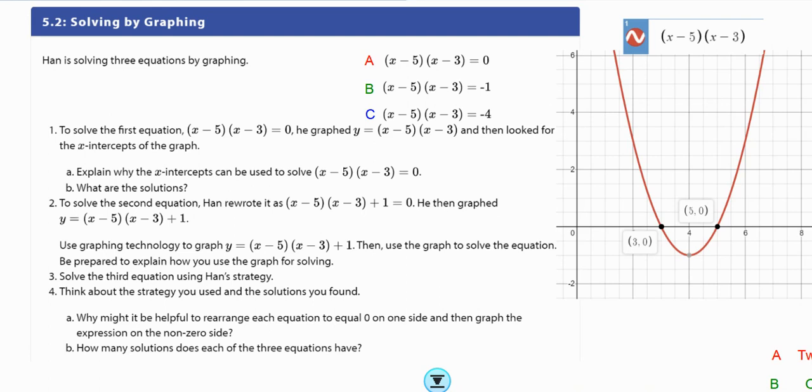Explain why the x-intercepts can be used to solve this equation. So we're going to look at this and say, this is my x-axis right here. Why would those intercepts be the solution to when y equals 0? When this equation is equal to y and in place of y, we plug in 0, we'll notice in our x, y coordinates, what do you notice there? Yeah, the y value is always 0 when we're on that x-axis.